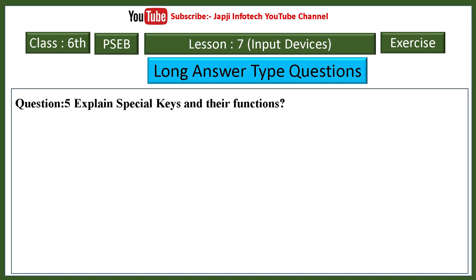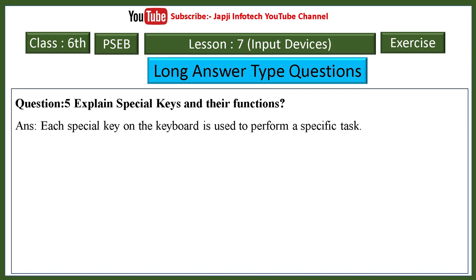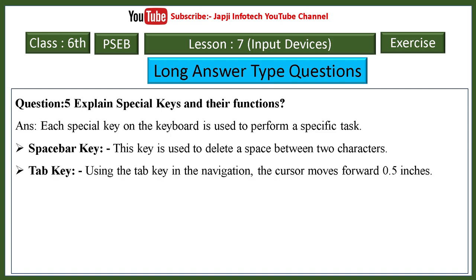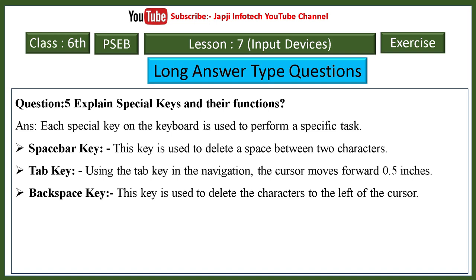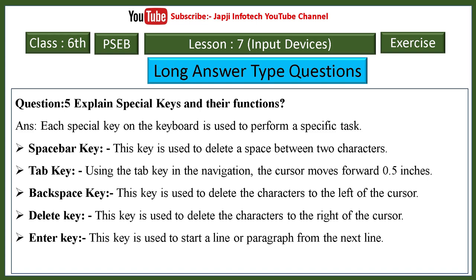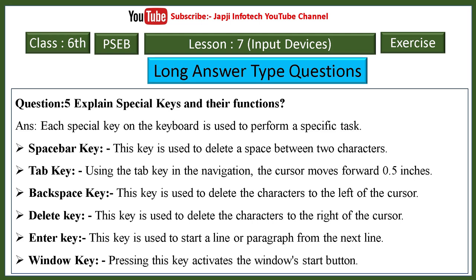Special keys and their functions in lesson seven. Space bar key is used to add a space between two characters. Tab key moves the cursor forward 0.5 inches. Backspace key deletes characters to the left of the cursor. Delete key deletes characters to the right of the cursor. Enter key starts a new line or paragraph. Window key activates the Windows start button.